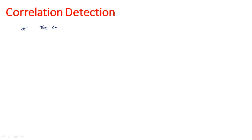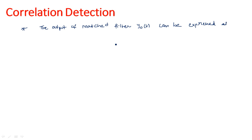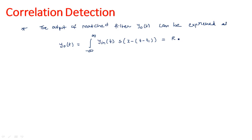The output of the matched filter, let it be y_naught(t), can be expressed as: y_naught(t) = integral from minus infinity to infinity of y_in(t) times s(λ minus (t minus t1)). This expression we have already discussed in previous videos — it equals the correlation of two different signals, r(t minus t1).